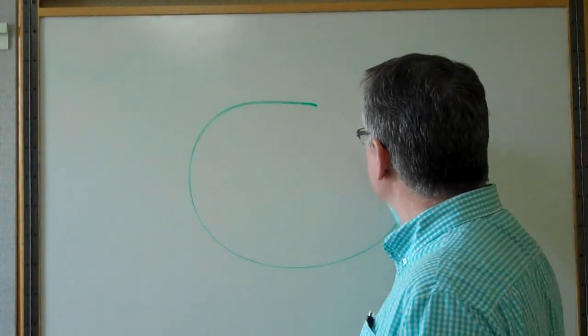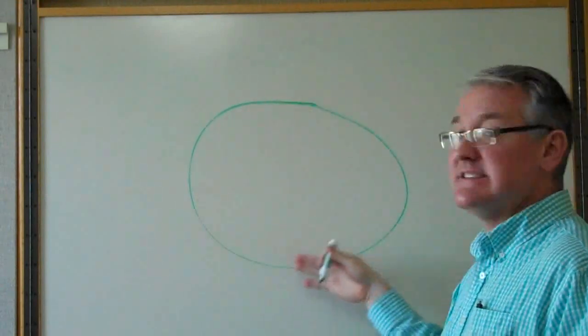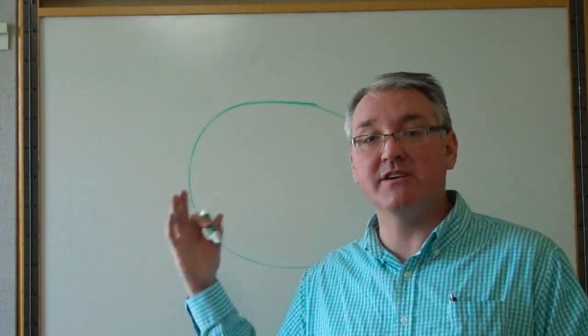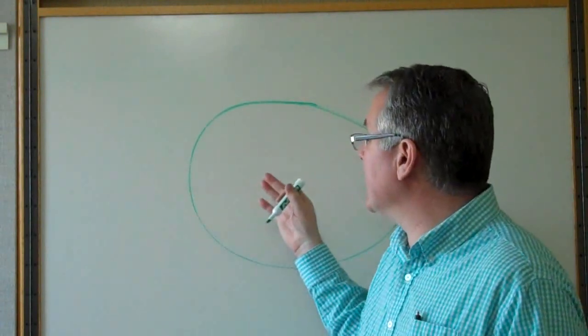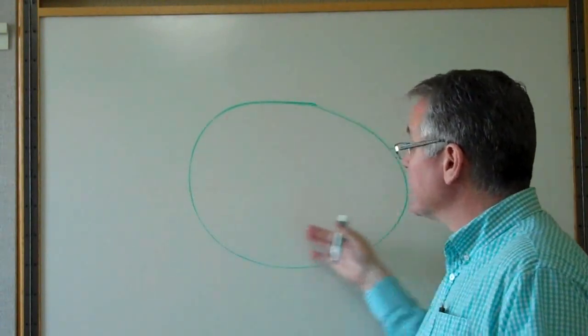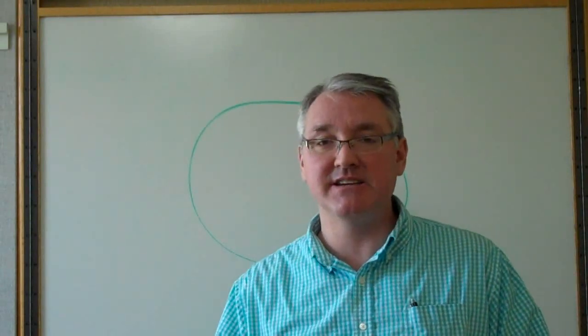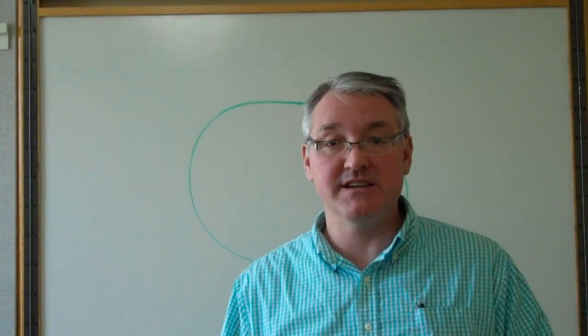So this circle, or oval, represents everything that needs to get done in your business. Now, when you're a sole proprietor and you're doing everything yourself, everything in here is done by just you. And you're intimately and immediately connected with everything going on in your business.